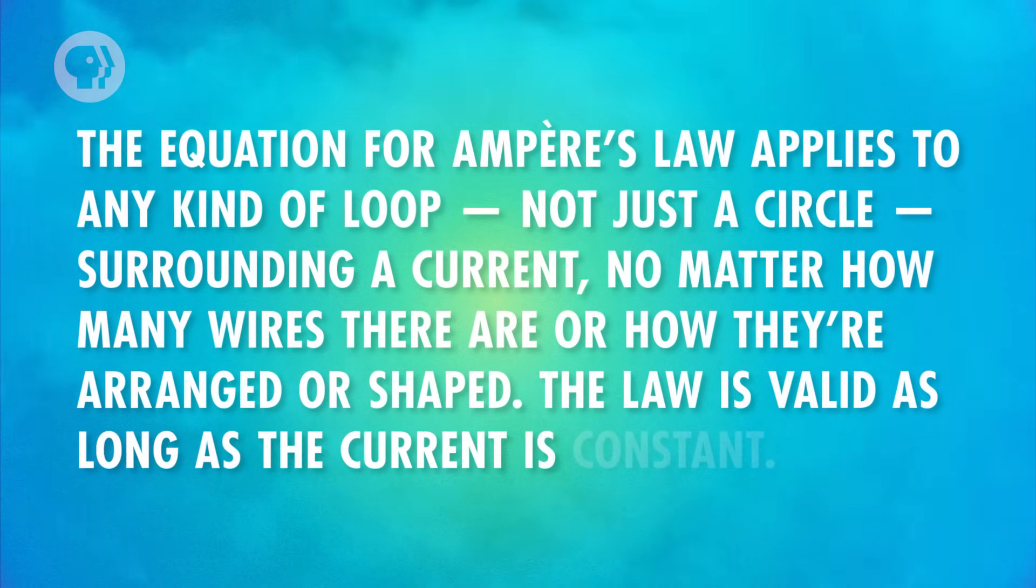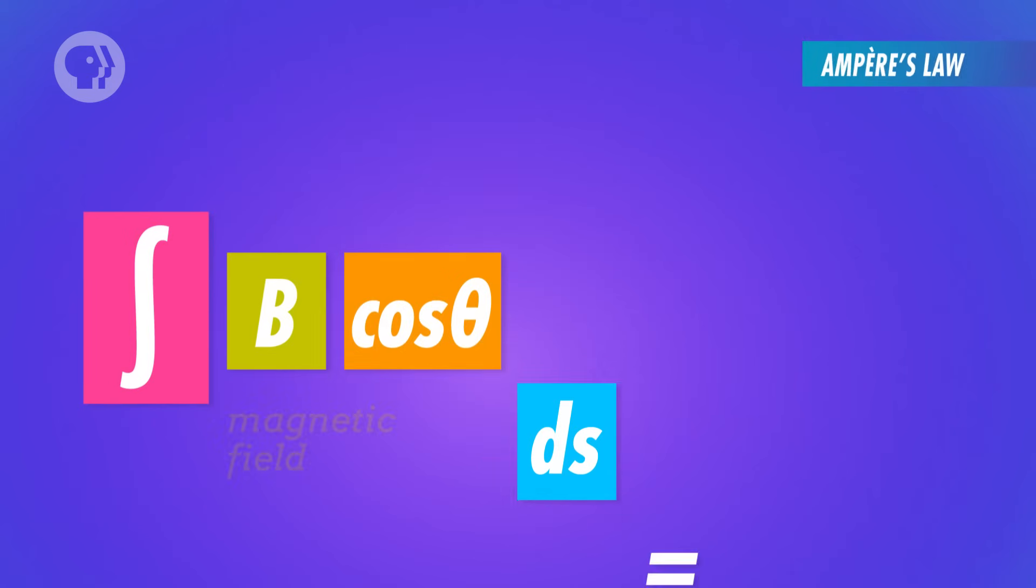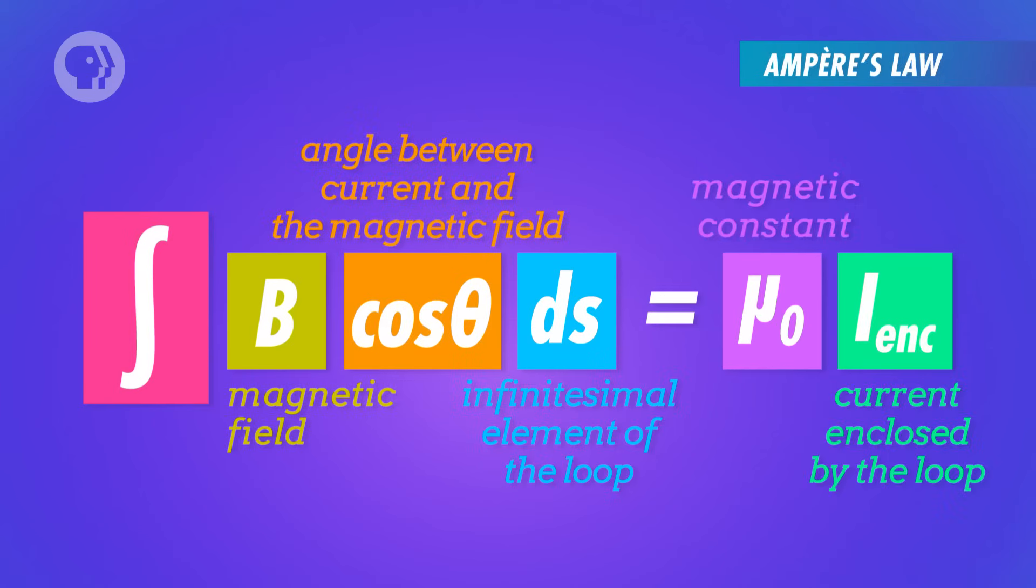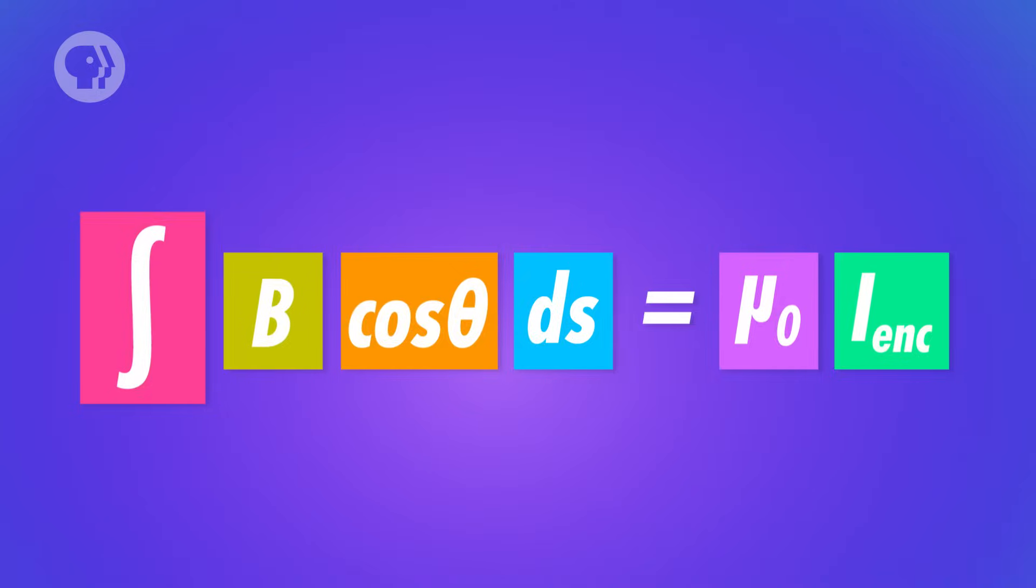The law is valid as long as the current is constant. The equation itself says that the integral of the magnetic field B, along the loop, times the cosine of theta, with respect to distance, is equal to a constant called mu zero, multiplied by the current running through the loop. This equation just means that the total magnetic field along the loop is equal to the current running through the loop times a constant number.